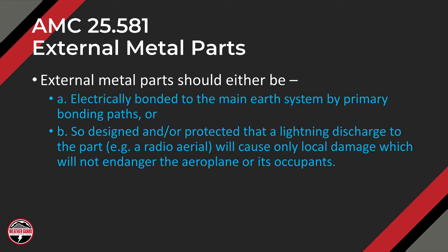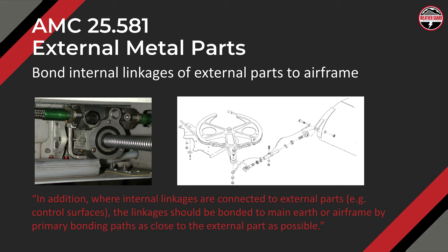What does that mean? Well, one: bond internal linkages of external parts to the airframe. What they're trying to do is get lightning currents off structural paths that are control surface related — screw jacks or a quadrant where the control cable attaches to an aileron, elevator, or rudder — using a bond jumper that dumps the currents off the control surface back to the main airframe structure, so a lot of current doesn't travel down the control line and create a catastrophic effect.